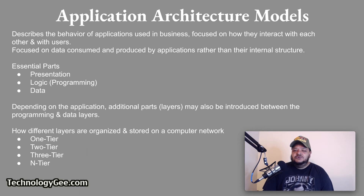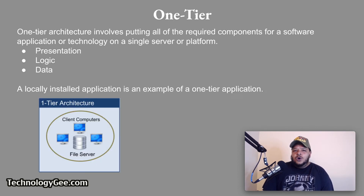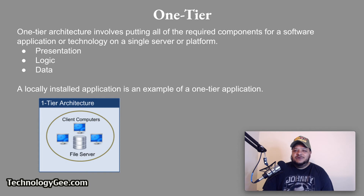The terms one-tier, two-tier, three-tier, and n-tier refer to how the different layers are organized and stored on a computer or network. One-tier architecture involves putting all of the required components for a software application on a single server or platform. One-tier architecture has the presentation, logic, and data layers all stored in the same location. A locally installed application is an example of a one-tier application.